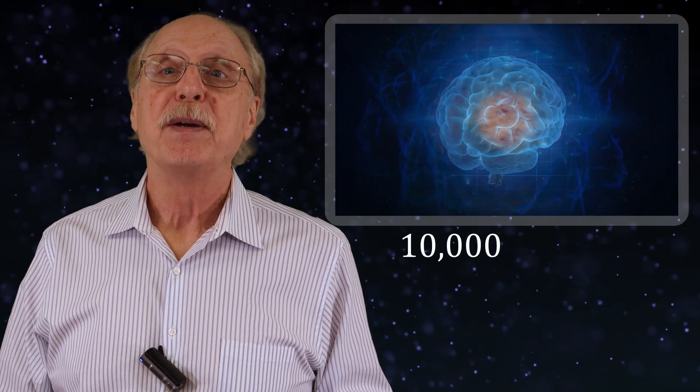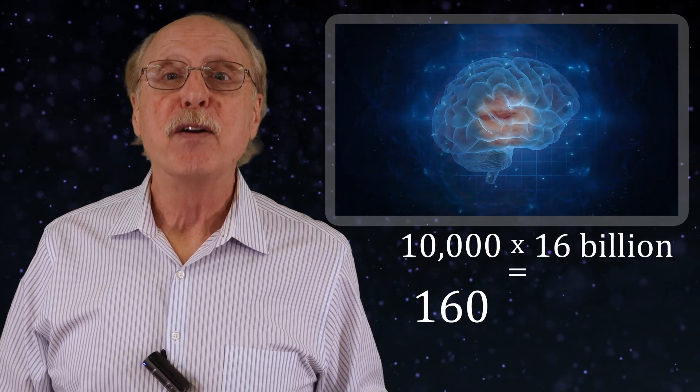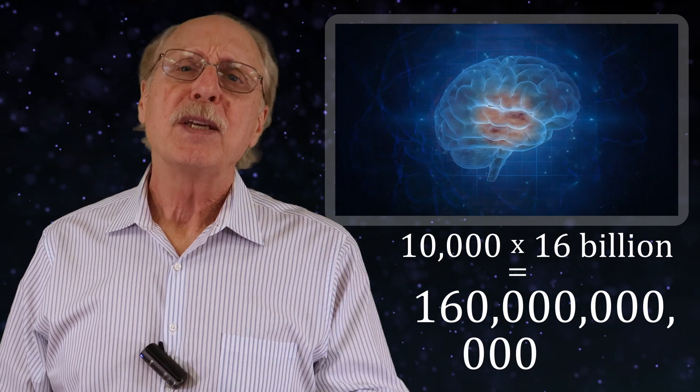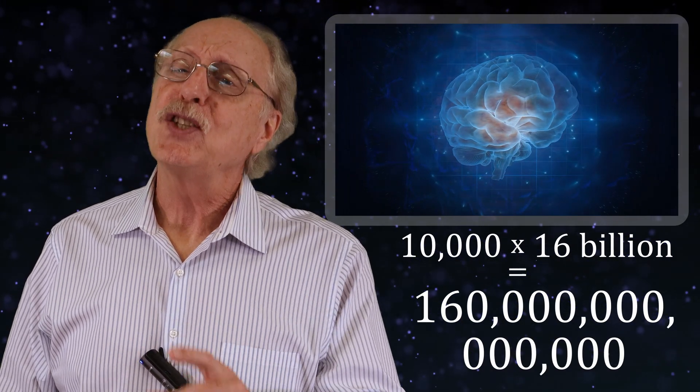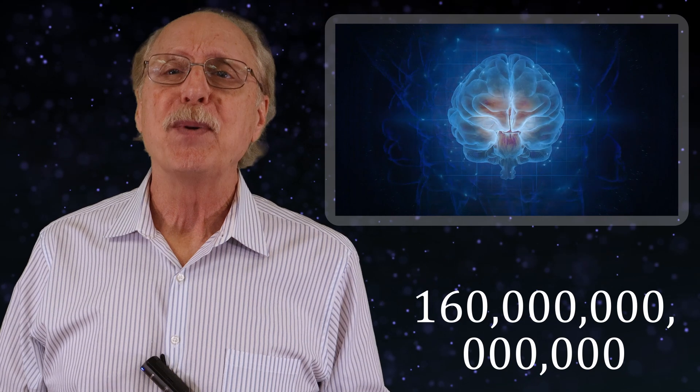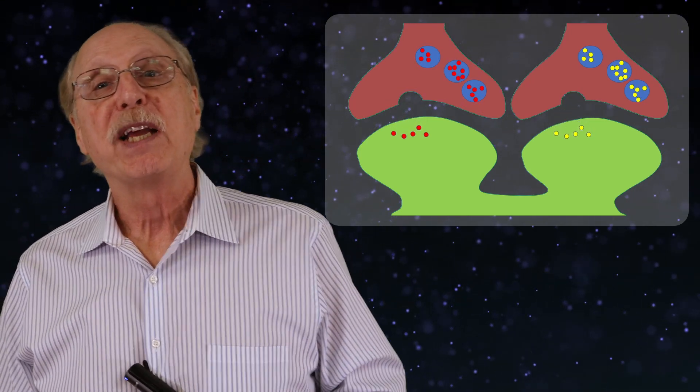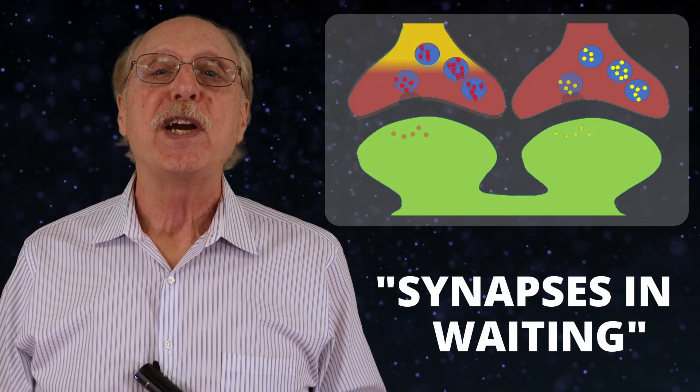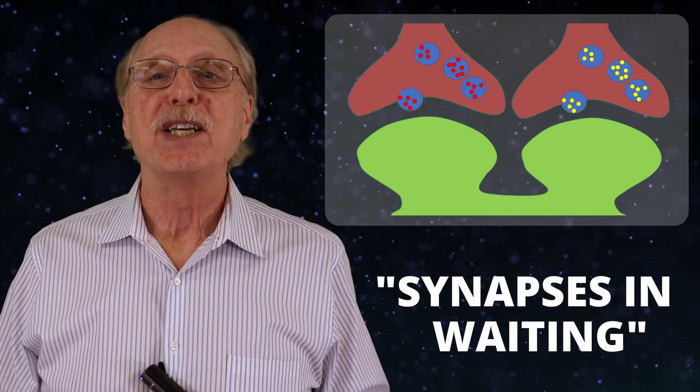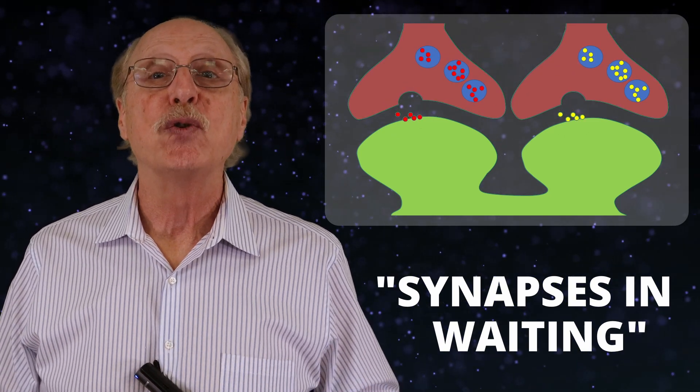In the brain, most of these synapses simply don't exist. The number of actual synapses is estimated at 10,000 per neuron, totaling only 160 trillion. This is a much smaller but still staggeringly large number, 160 terabytes. A huge proportion of these synapses have near-zero weights. I call these synapses in waiting, which are there to store a memory by changing weight quickly should the need arise.